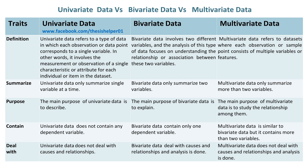Univariate data does not contain any dependent variable. Whereas bivariate data contains only one dependent variable. Whereas multivariate data is similar to bivariate data but contains more than two variables.